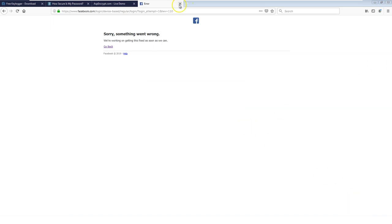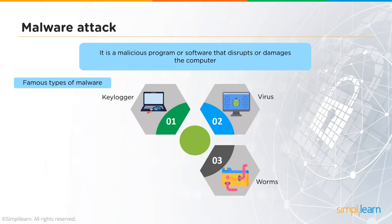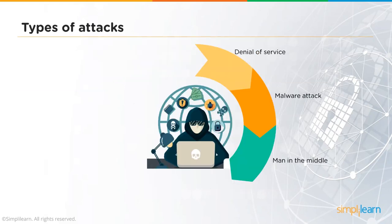Viruses are destructive programs that, once executed, destroy data or harm the hard disk or partition tables. Worms replicate themselves to consume computer resources, crashing the computer and requiring a reboot. A Trojan horse is software that creates a backdoor or covert channel, allowing a hacker to gain access to the victim's machine without the user's knowledge or authorization.